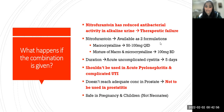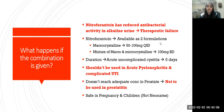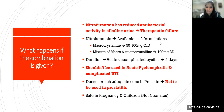A very important practice point: nitrofurantoin should not be used in cases of acute pyelonephritis and complicated UTI. It doesn't reach adequate concentration in the prostate, and hence should not be used in prostatitis either. The only indication for nitrofurantoin should be acute uncomplicated cystitis. It is considered safe in pregnancy and children, but not in neonates.